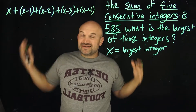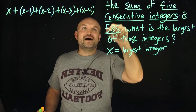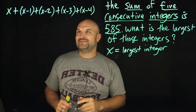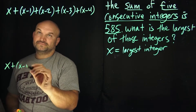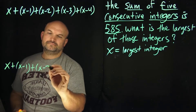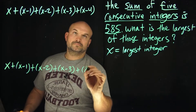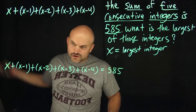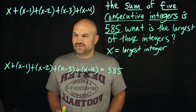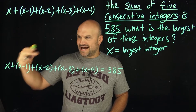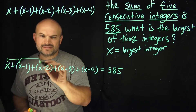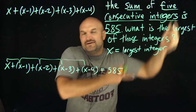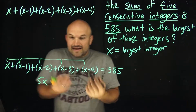This is all going to be equal to 585. Let's go ahead and rewrite everything. Now I have this equation, and I can add the x's: x plus x plus x plus x plus x. Since we have five of them, that's just going to be 5x.